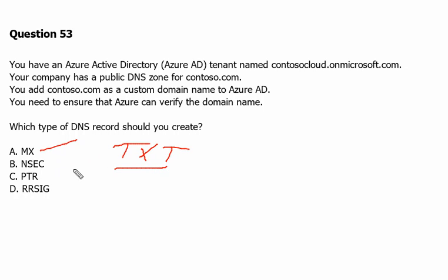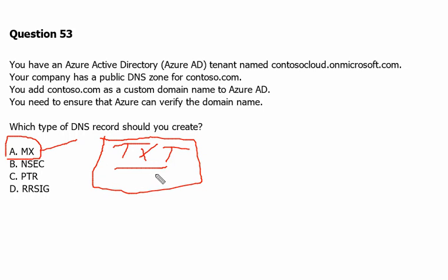In the exam, we may have one option available with the MX record, or another question with the TXT record. Keep in mind that if MX is available we select MX, otherwise we select the TXT record. We are also going to check this on the Azure portal.